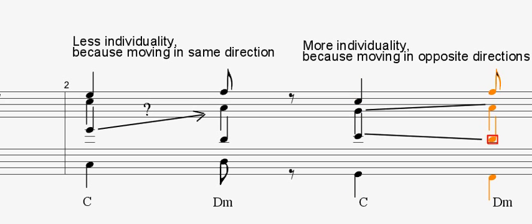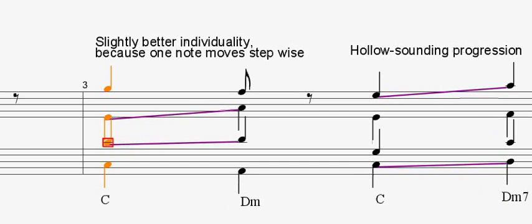Over the years, many exceptions to the hidden fifth and octave rule have been introduced, based on the argument that in some instances where a fifth or octave interval is approached by similar motion, which means motion in the same direction, the individuality of the voices was not lost provided one of the voices moved stepwise. This makes sense, since it is less easy to lose track of a voice if it moves a step up or down.